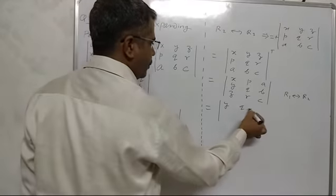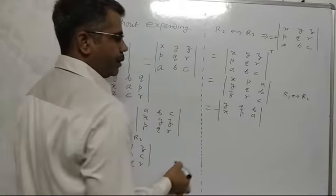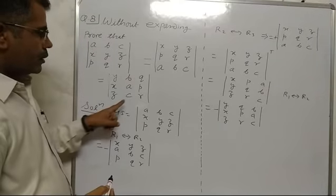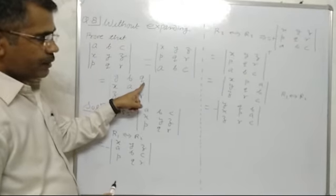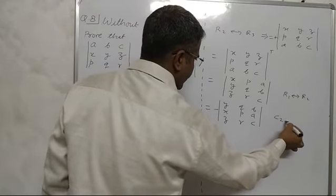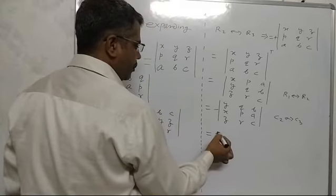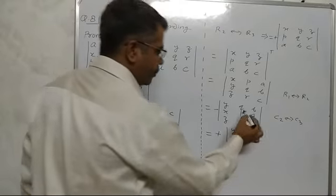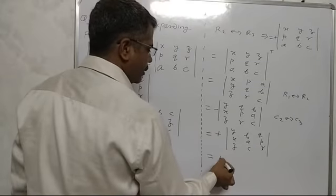After R1 interchange R2, we apply minus. We get rows Y, Q, B; X, P, A; Z, R, C. Again, in the second column Q is required and B needs to move, so we interchange column C2 interchange C3. Again we apply minus times minus equals plus, giving Y, X, Z; Q, P, R; B, A, C. It is RHS.